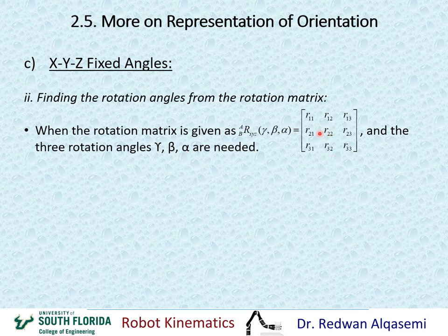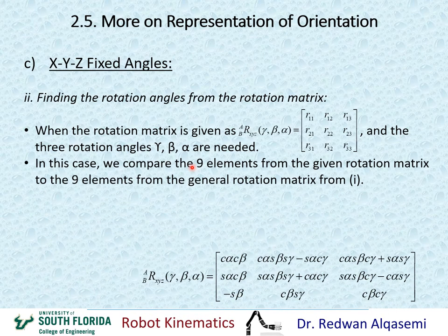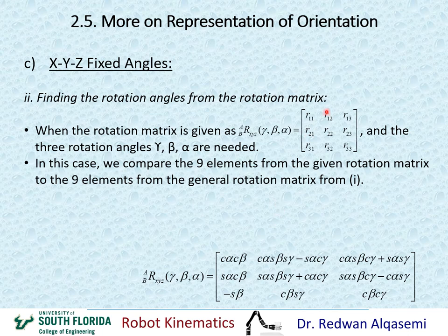We are given the equivalent rotation matrix and need to find the individual three angles. To do this, we compare the nine elements from the given rotation matrix with the nine elements from the general rotation matrix formula we derived. By comparing elements and solving the resulting equations, we can find beta, alpha, and gamma.